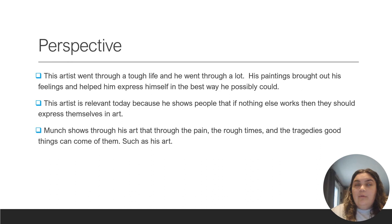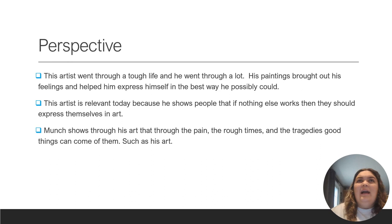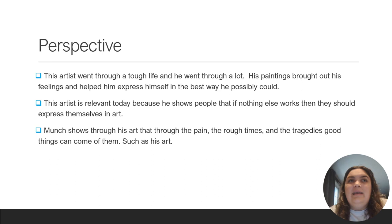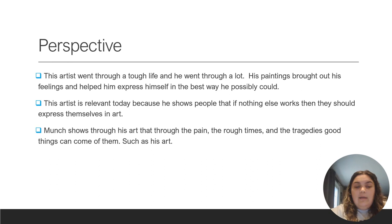Edvard went through a very tough life. He didn't have a lot. His dad was working all the time, and after his mom and sister died, his dad kind of separated himself from the rest of the kids. Edvard just took everything he was going through in his life and expressed it through his paintings. I feel like he's relevant today because in these paintings you see that no matter what's going on in your life, you can express yourself in art and show how you're feeling. Munch shows through his art and through his painting that the rough times and tragedies can come through as good things — like his art. He was struggling and going through a lot, but it brought him his art.